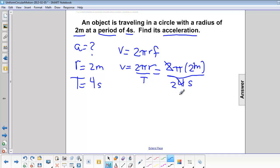Cross this out. 1 over 2. And we have 2π meters over 2 seconds. We're left with π meters per second.